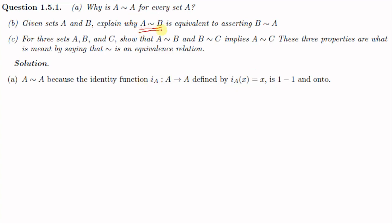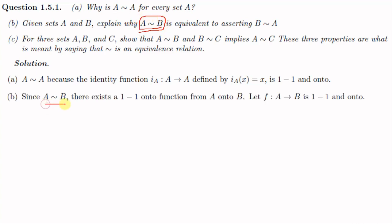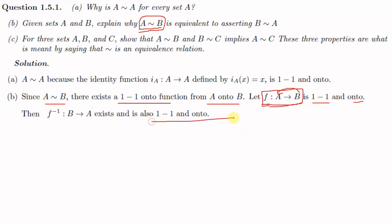For Part B, let us assume that A is similar to B. This means there exists a one-to-one onto function from A to B. Let f be this one-to-one onto function from A to B. Since f is one-to-one, the inverse function f⁻¹ exists from B to A. Since f is one-to-one and onto, the function f⁻¹ from B to A will also be one-to-one and onto. So we got a function f⁻¹ from B to A which is one-to-one and onto, meaning B is similar to A. So we have shown that if A is similar to B then B is similar to A, completing the proof of Part B.